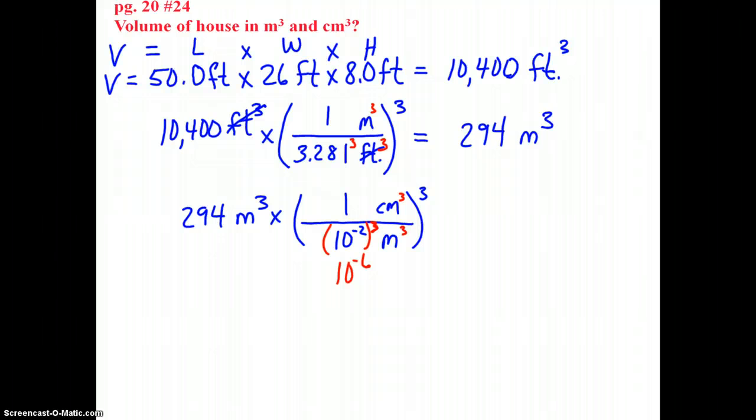So we take 294 meters cubed, which is now canceled out. 294 divided by 10 to the negative 6. Go ahead and do that on your calculator, or you can do it in your head, too, if you want. 2.94 times 10 to the 8 centimeters cubed is our answer.